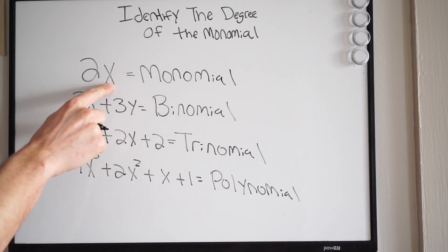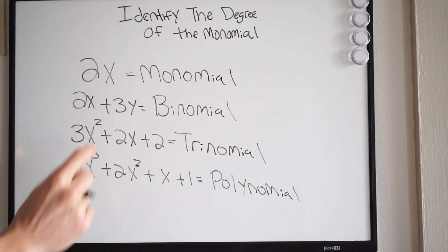Okay. So, for one term, we have monomial, two terms, binomial, three terms, a trinomial, and if we have 4 terms or more, that's going to be called a polynomial.